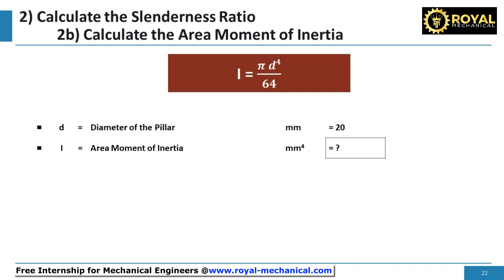Next, let's calculate the area moment of inertia for the pillar. The formula is: I is equal to pi times D raised to the power of 4 divided by 64. By substituting the value of diameter, the area moment of inertia of the pillar is 7,854 millimeters raised to the power of 4.